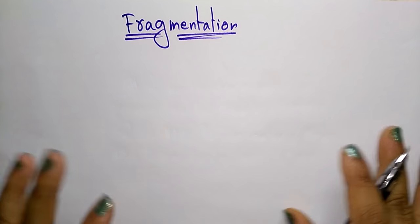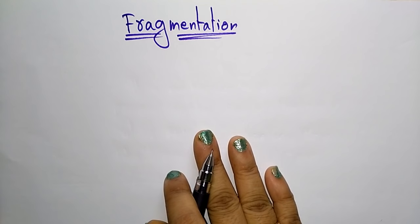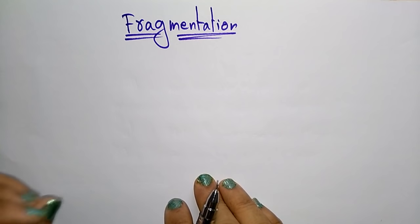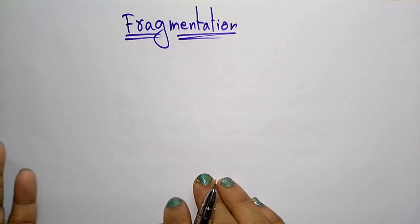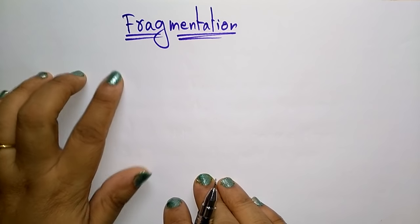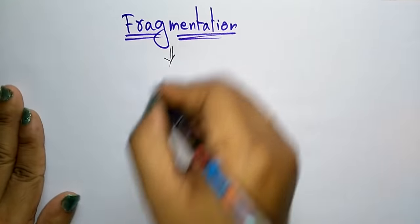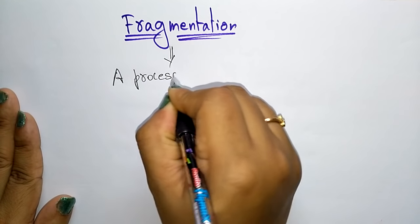Coming to the next topic, that is fragmentation. This is one of the important concepts in main memory. You have to know the concept of fragmentation — how the data is stored in main memory, how the data is removed from the main memory and swapped to the secondary memory, and again it comes back. Whenever it comes back, is there space in main memory or not? That everything depends upon fragmentation.